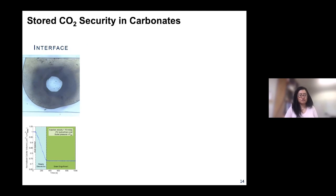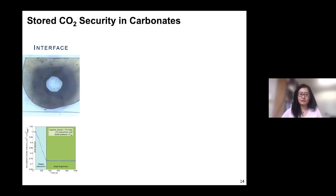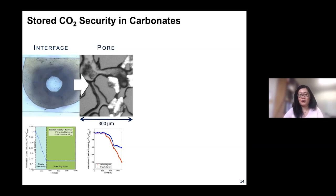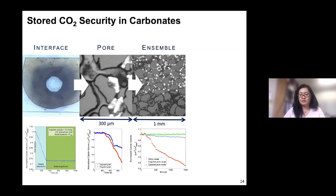In today's talk I'll give two vignettes on what we're doing with CO2 storage in geologic systems. The first vignette is assessing and understanding the mechanisms that underlie the security of CO2 stored in carbonates. The motivation is that carbonates are a ubiquitous material — they host over half of the world's hydrocarbon resources and are known to be very good reservoirs. We started at the interfacial level and discovered a mechanism called grain engulfment, which we then took up to higher degrees of complexity to understand its dominance at the pore, pore ensemble, and reservoir scales.